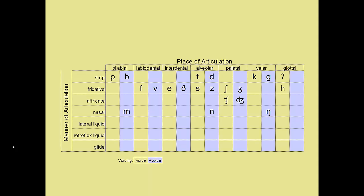The next row is the nasals. All of these sounds rely on air that will come through your nose and not your mouth. The next two rows are the liquids — the lateral and retroflex. And the last row comprises the glides w and y.